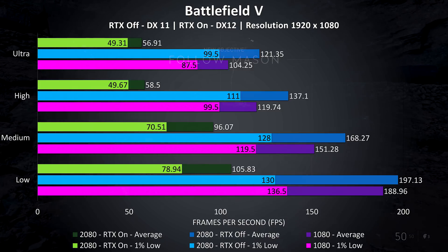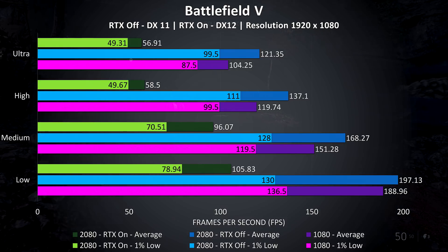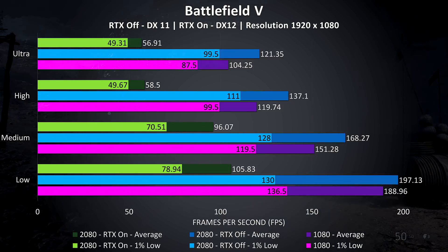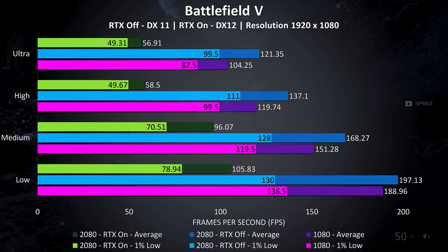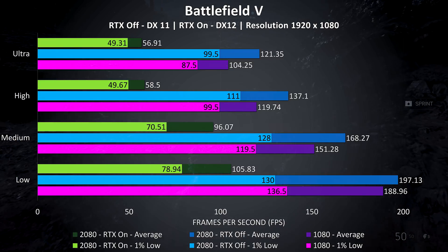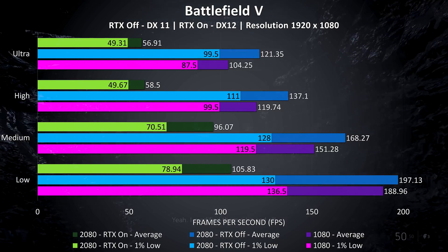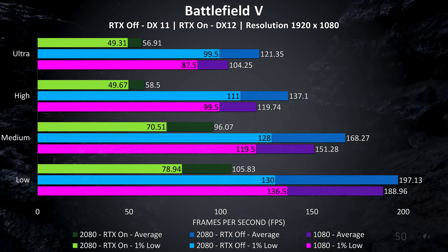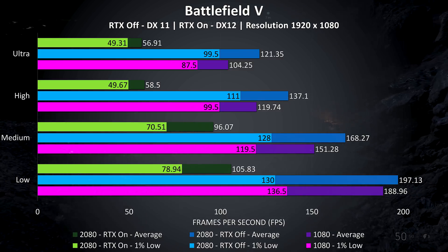Let's start with Battlefield 5, given it's one of the only games currently supporting RTX. While I obviously can't compare ray tracing on with the 1080 as it doesn't support it, we can get an idea of how it performs in this best case scenario. I doubt we'll see a more powerful laptop than a 9900K with RTX 2080. With RTX on shown by the green bars, at 1080p I still found it pretty playable at ultra settings, averaging just under 60 FPS, though not great considering this is basically best case laptop hardware and we're only at 1080p.